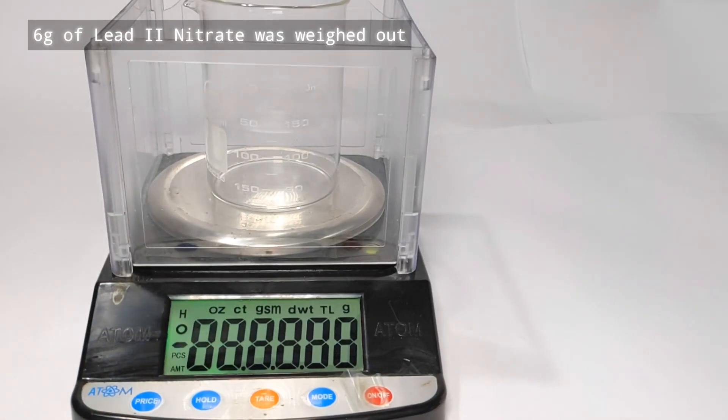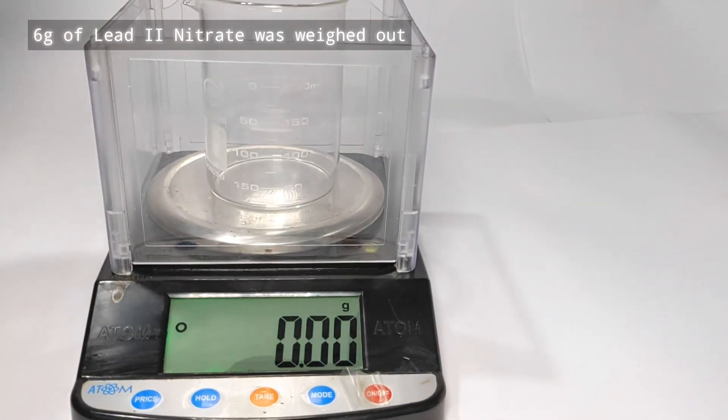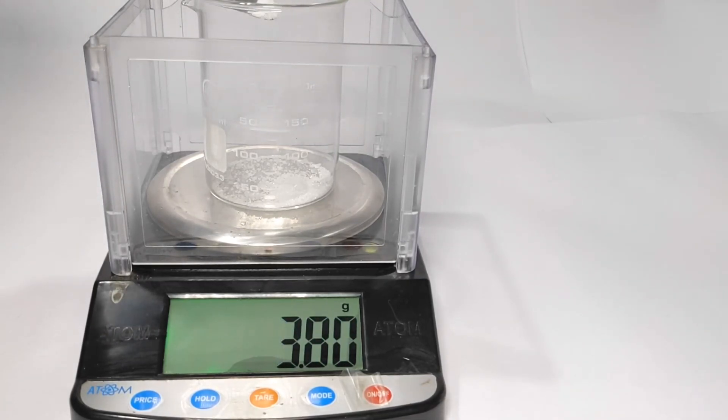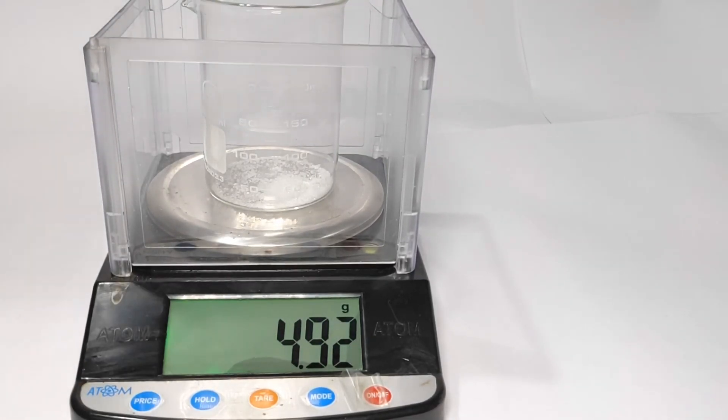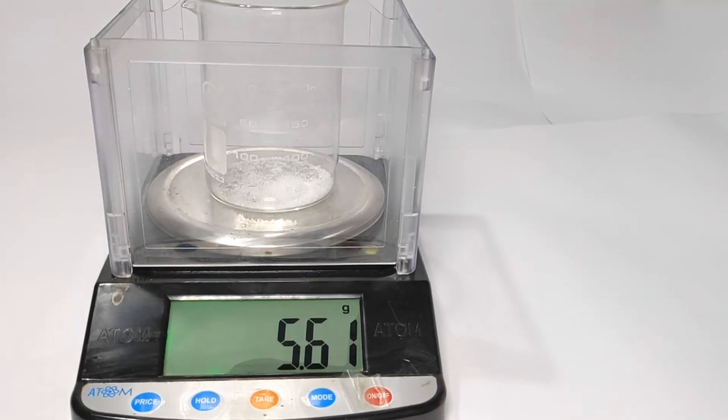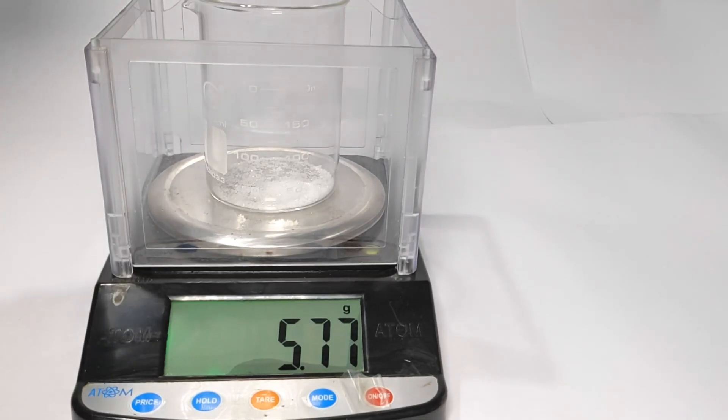Start by weighing out the reactants. 6 g of lead(II) nitrate was weighed out in a 250 ml beaker. Lead(II) nitrate is a colorless, crystalline, very toxic salt. It is also water soluble and could cause acute lead poisoning.